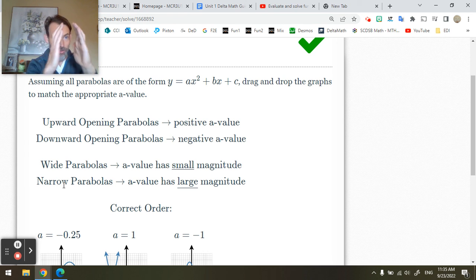And if it's narrow, then a will be big, like bigger than one, or maybe one. Okay? So that's how you would distinguish for those a values.